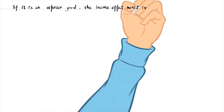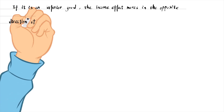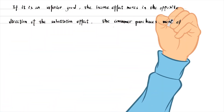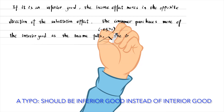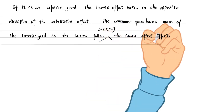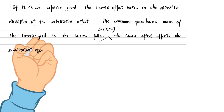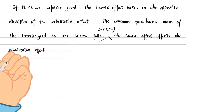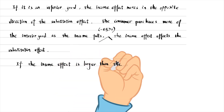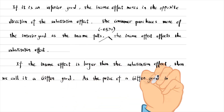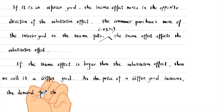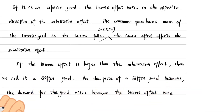If it is an inferior good, the income effect moves in the opposite direction of the substitution effect. The consumer purchases more of the inferior good as the income falls. The income effect is positive while the substitution effect is negative. The income effect offsets the substitution effect. If the income effect is larger than the substitution effect, then we call it a Giffen good. As the price of a Giffen good increases, the demand for the good rises because the income effect more than offsets the substitution effect.